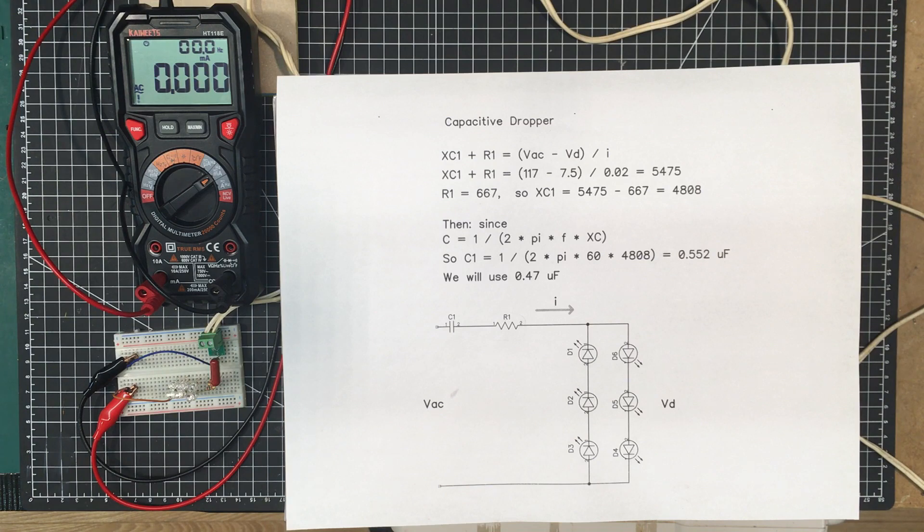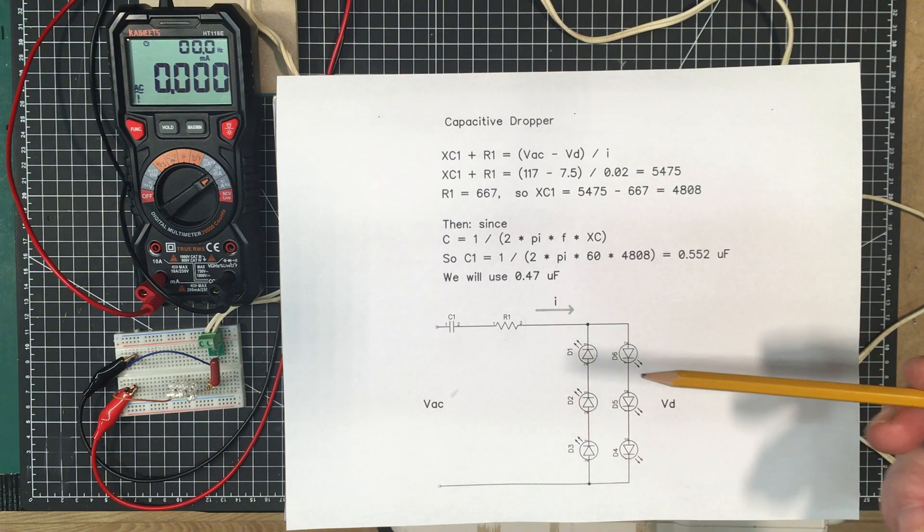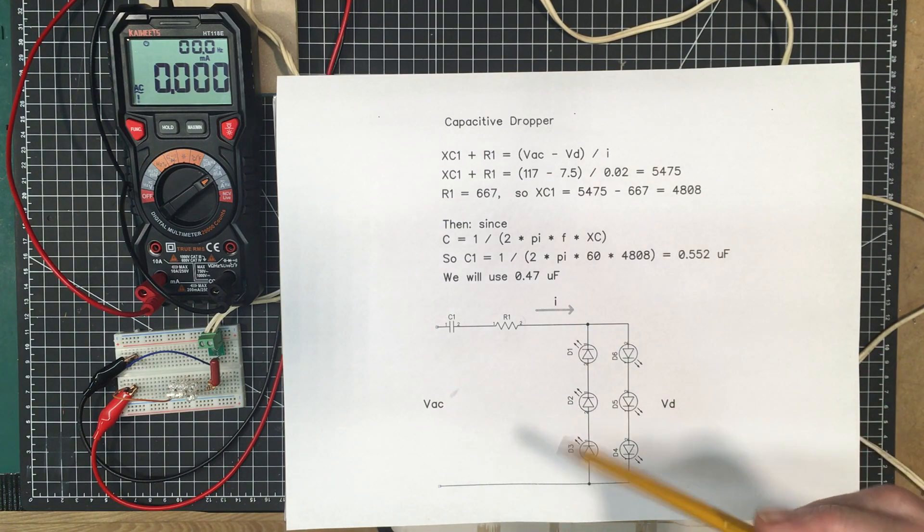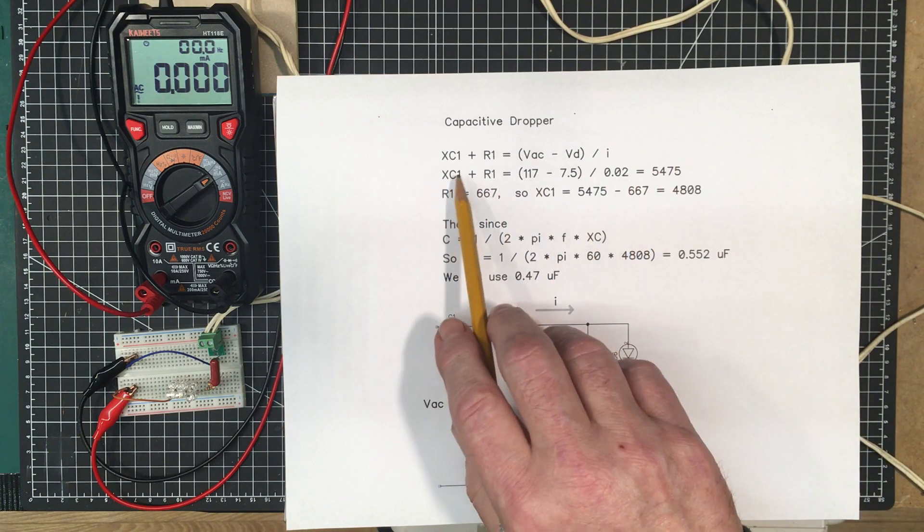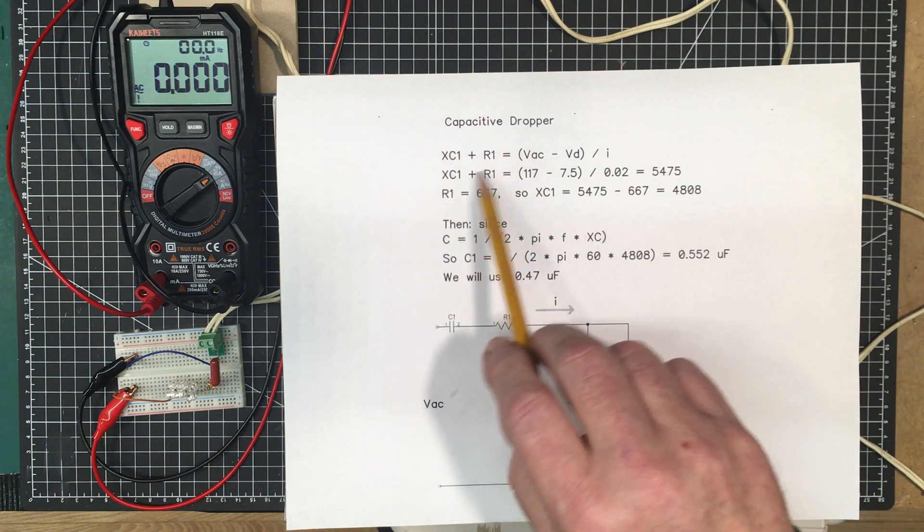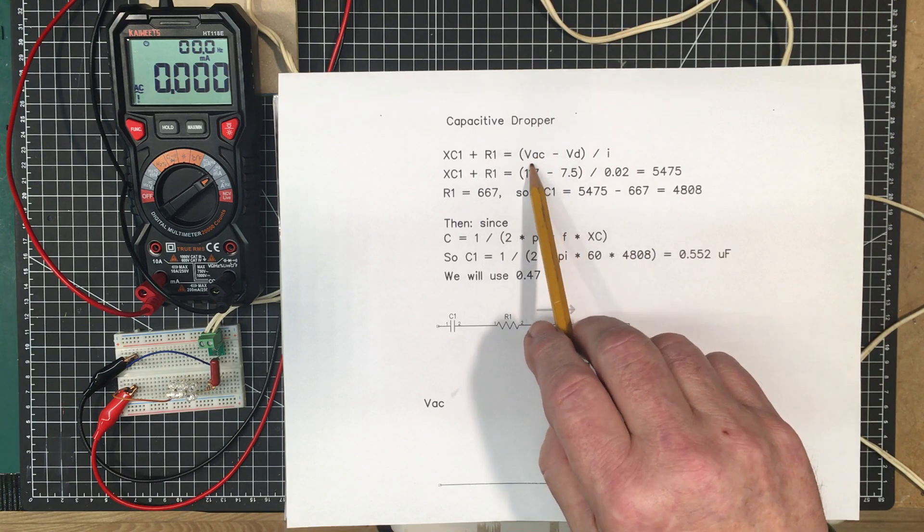Then the capacitor. I want a total of 20 milliamps going through this circuit here, so we're going to do the math to figure out what size of capacitor we need for that. We're deciding on the current—we're going to go with 20 milliamps—and we're going to use this formula here.